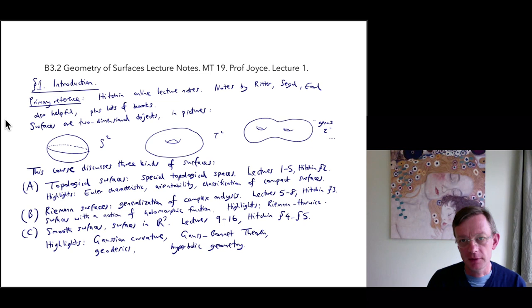Hello, this is the B3.2 Geometry of Surfaces Lecture 1. So my primary reference for this course will be the Hitchin Online Lecture Notes. There's various notes by Ritter, Siegel, Earl and so on, which are also helpful. And there are lots of books available.